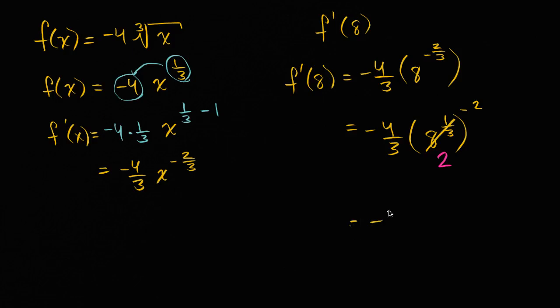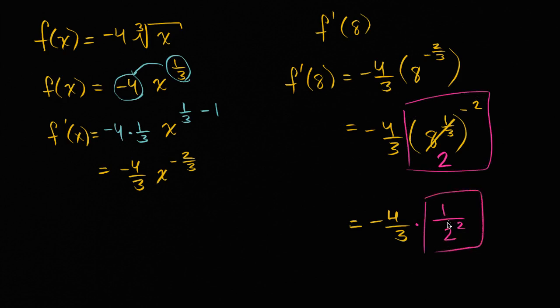This is equal to -4/3 times 2 to the -2, is the same thing as 1 over 2 to the 2. These two things are equivalent. That and that. 1 over 2 to the 2 is the same thing as 2 to the -2. So this is 1 over 4.